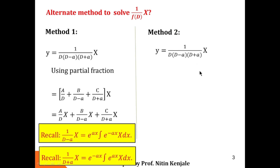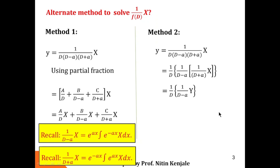In the second approach, we place proper parentheses in the expression. Inside we write 1/(D + a)·X, outside that we write 1/(D − a), and outside that we write 1/D. We first solve the innermost bracket — 1/(D + a)·X — using the formula, and call the result y. Then we find 1/(D − a)·y using the formula and call it z. Finally, we find 1/D·z, which is the integral of z, giving the particular integral.